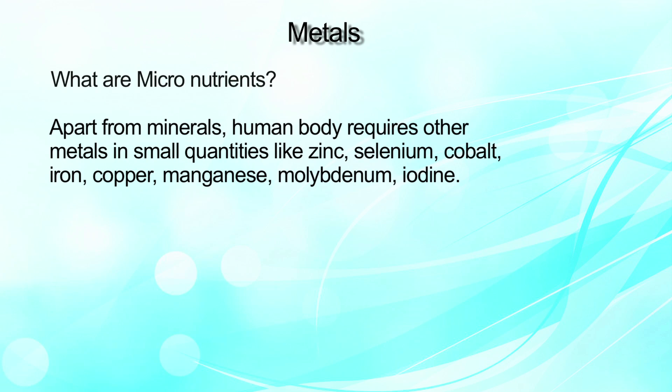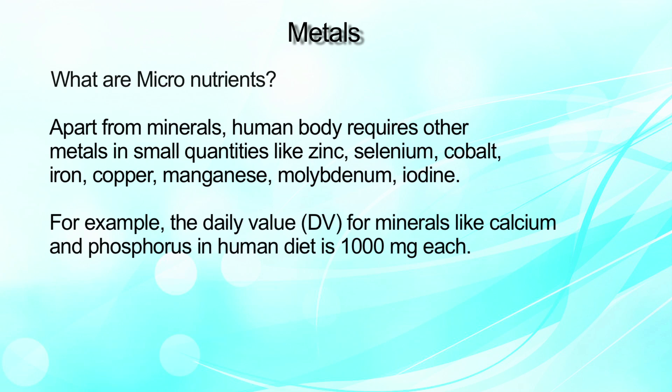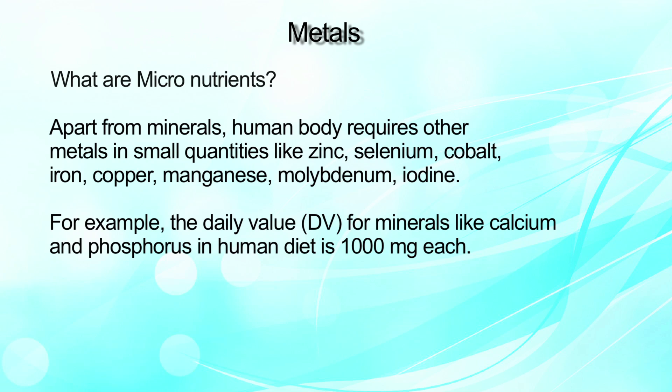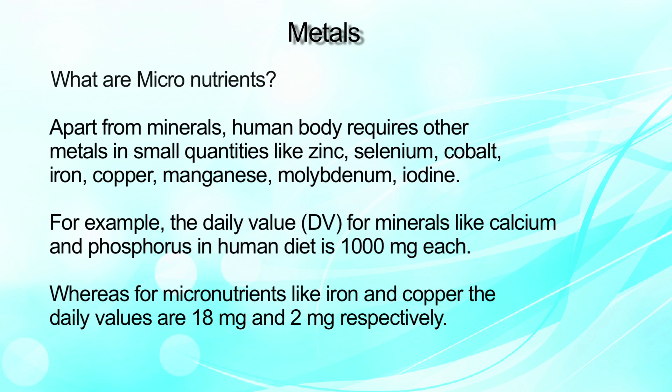What are micronutrients? Micronutrients are the nutrients or metals that are required at trace levels, and therefore they are called micronutrients. Apart from minerals, the human body requires other metals in very small quantities like zinc, selenium, cobalt, iron, copper, manganese, molybdenum, and iodine. For example, the daily value for minerals like calcium and phosphorus is in the range of 1000 milligrams, whereas for micronutrients like iron or copper the daily values can range from 18 milligrams to 2 milligrams respectively.